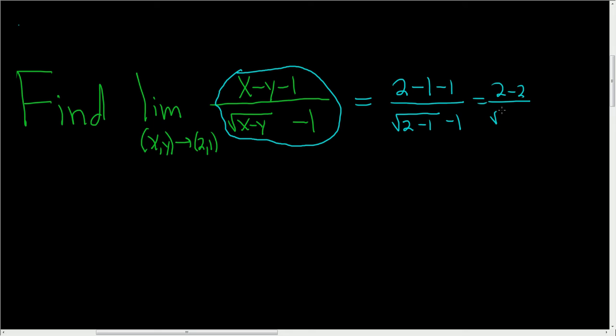And downstairs we have the square root of 1 minus 1. So we get 0 over 0. So no good. That does not work.